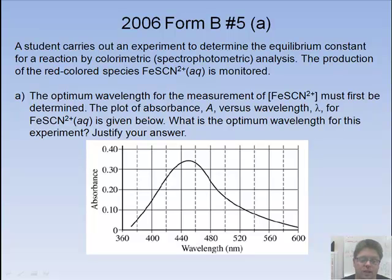Here in 2006, Form B. This is looking at a student carries out an experiment to determine the equilibrium constant for a reaction by spectrophotometric analysis or colorimetric as it's called. You've got the red species. Iron thiocyanate is monitored. The optimum wavelength for a measurement of iron thiocyanate must first be determined. So you take a plot of absorbance A versus wavelength for FeSCN is given below. So the first question, what's the optimum wavelength for this experiment? Take a moment and look at the graph. What do you think it would be?